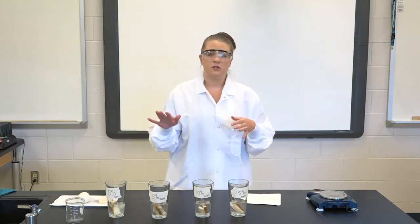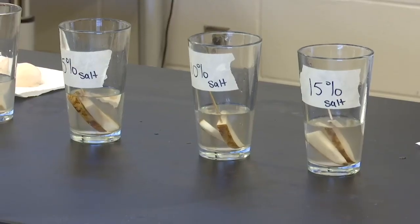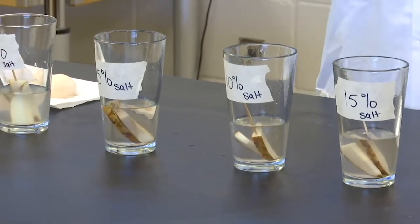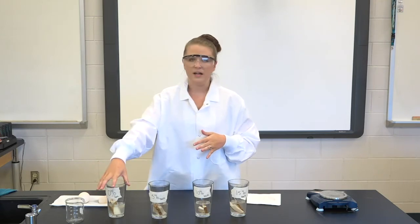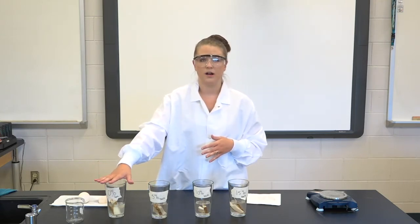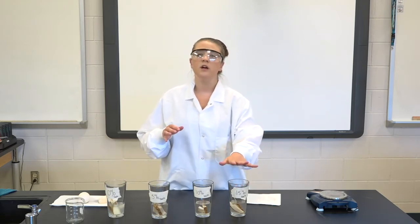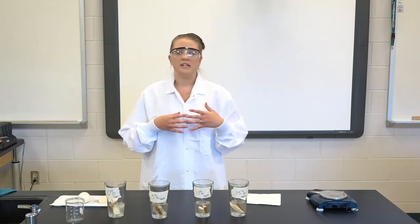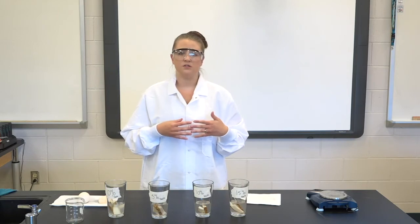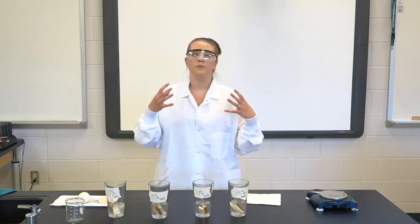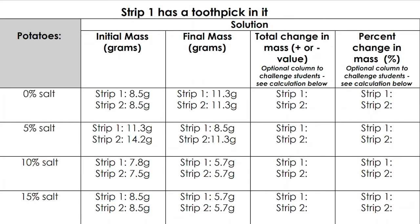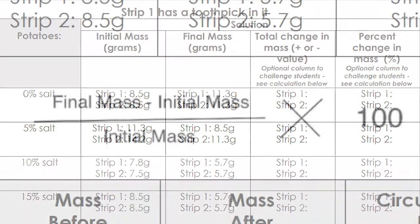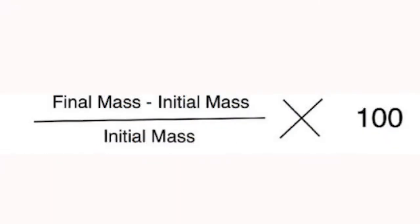Do this for each glass until we have filled out our data table. What do you notice has happened? Why do you think the mass for the potatoes in just water has increased, and why do you think the mass for the potatoes in salt has decreased? Do you think the salt or the water has moved in or out of the cells to either make it shrink or become larger? Your teacher may have you do the percent change in mass, which are the next two columns on your data table. If so, please see the formula at the bottom for getting the total change in mass and the percent change.